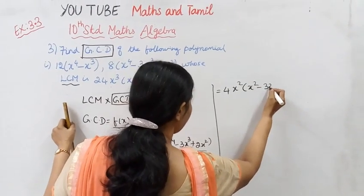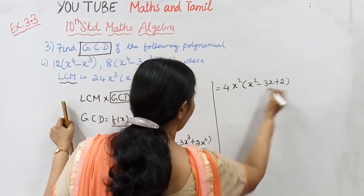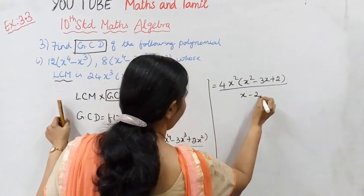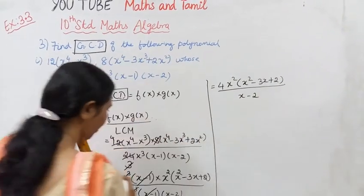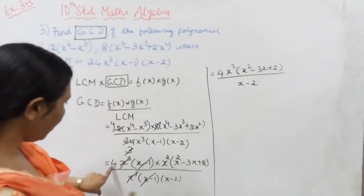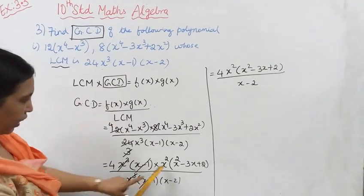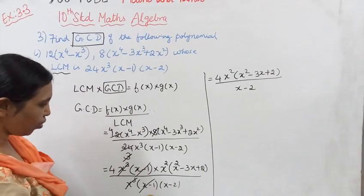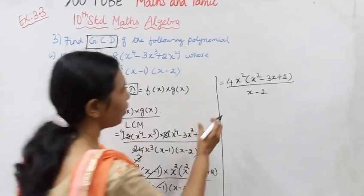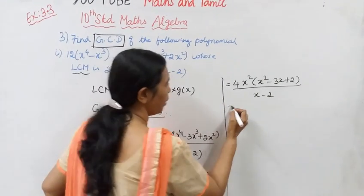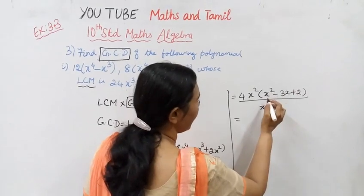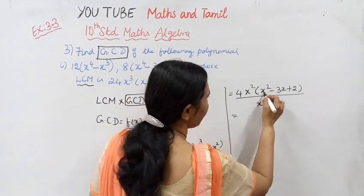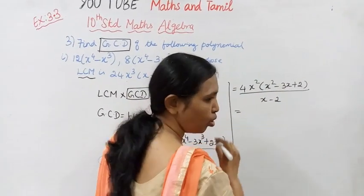We now have x² minus 3x plus 2 divided by x minus 2. Can we cancel? Let's check — x² minus 3x plus 2 is a quadratic expression divided by x minus 2.